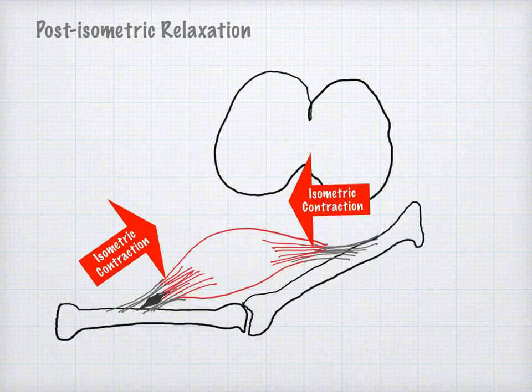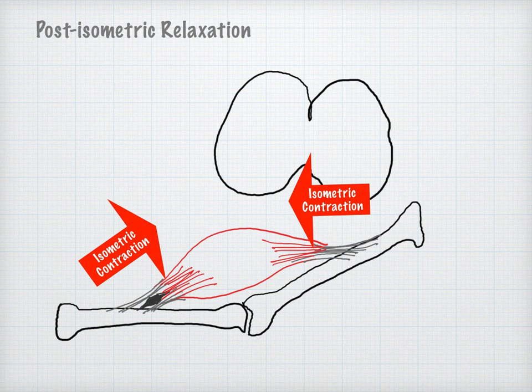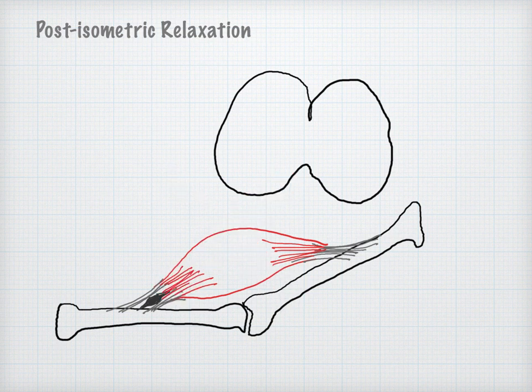There are six types of mechanisms for muscle energy. The first mechanism is post-isometric relaxation. Immediately after an isometric contraction, the neuromuscular apparatus is in a refractory state,